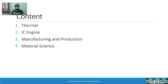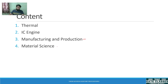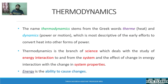The third part is manufacturing and production, which will deal with different processes of manufacturing like forging, casting, welding, and so on. The last one is material science, dealing with the properties of materials like steel, cast iron, and the iron-carbon diagram. From these four parts, I will be dealing with the thermal part. So let us start with thermodynamics.